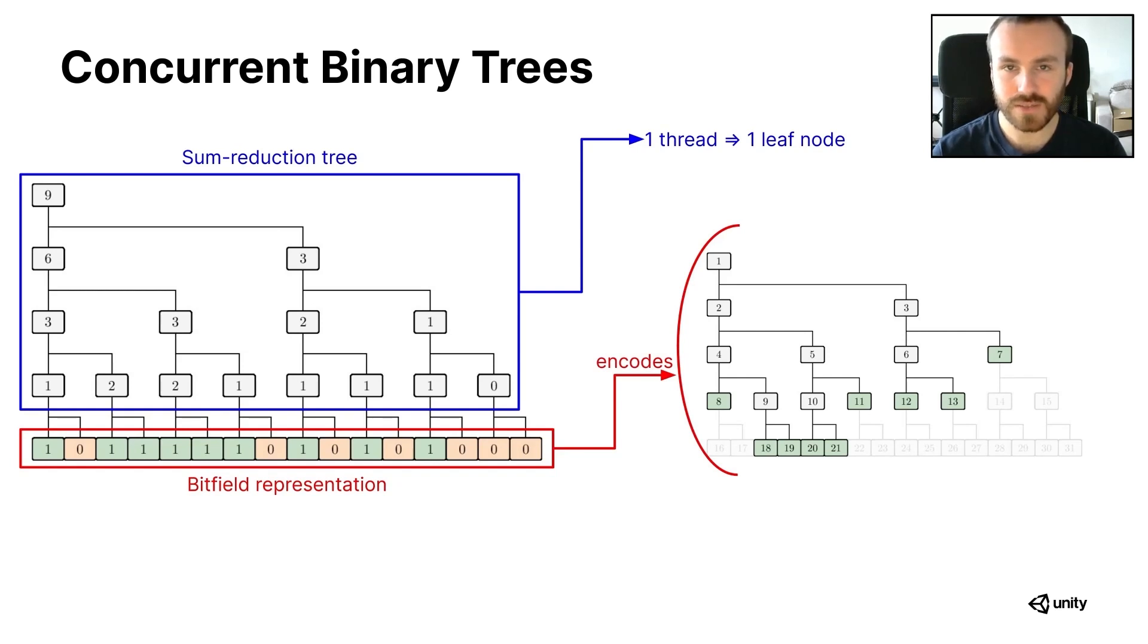Then by traversing down this sum reduction tree, it gives us a way to loop over the bits set to one while ignoring the zeros. Or in other words, to loop over the leaf nodes. Going back to our practical example where the encoded binary tree represents a longest edge bisection, we use this to assign one thread per active triangle in the subdivision.